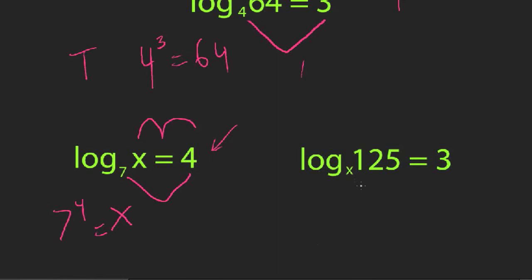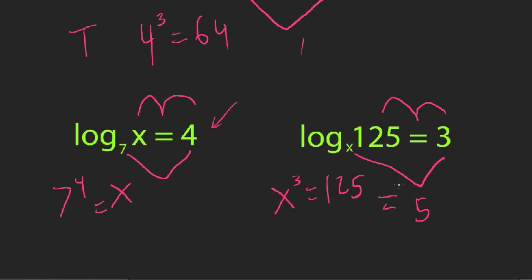Here's another one. Log base x of 125 equals 3. You can get x to the 3rd equals 125. So from there you can take the cube root, get x equals 5. You don't often see the unknown in the base of the logarithm but it's possible. So that's how you use the Heart method to convert between logarithmic expressions or equations and exponential equations.